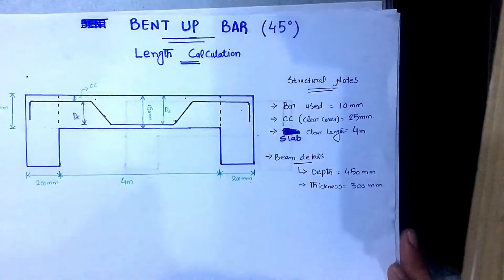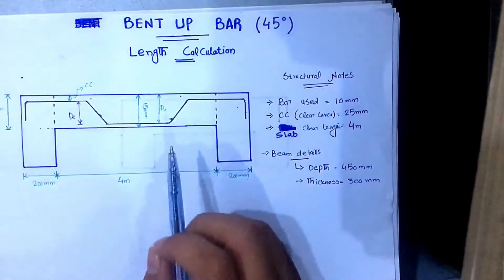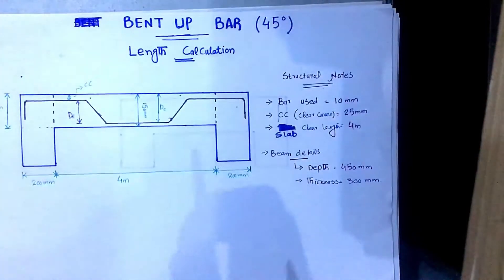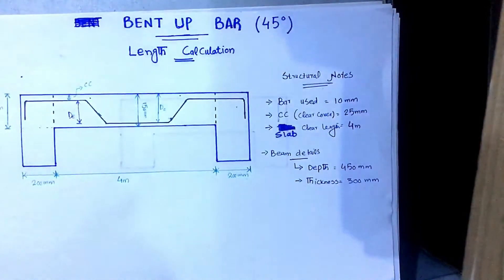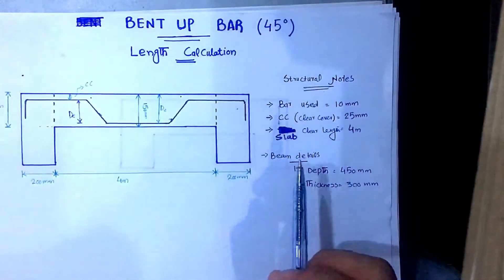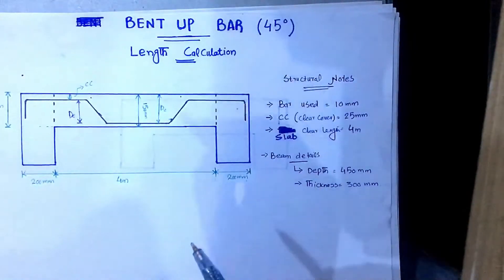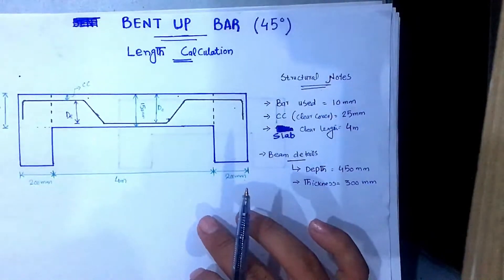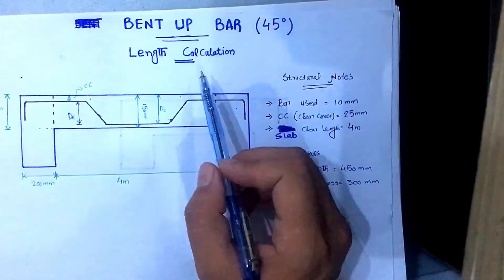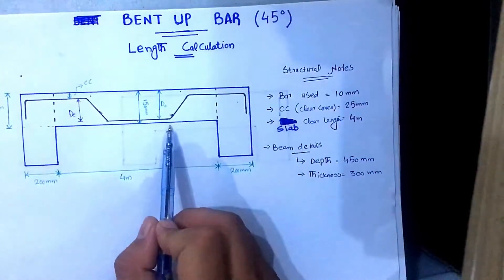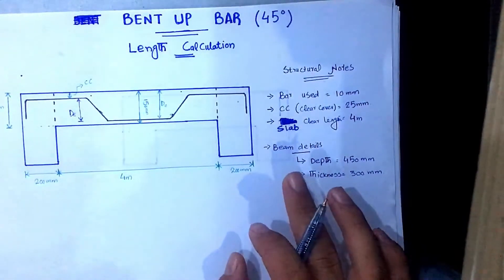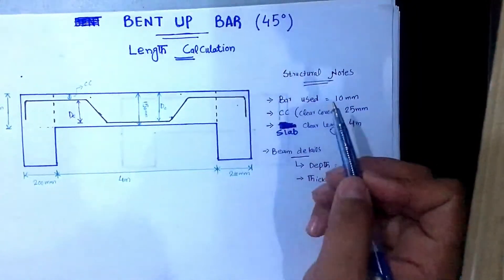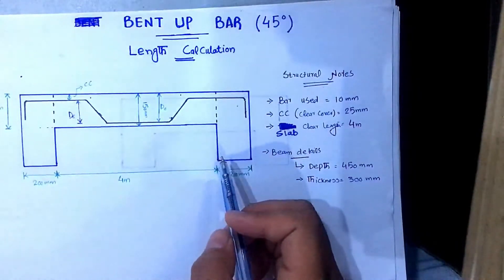Assalamu alaikum, welcome to the Dynamic Engineer. Today we are going to talk about the basic concepts of bar bending schedule for a slab — specifically how to calculate the bar bending schedule. The first concept is the bent up bar length calculation. This bent up bar method is used in house construction; in high-rise buildings this method is not used, but in all house construction we use this method.